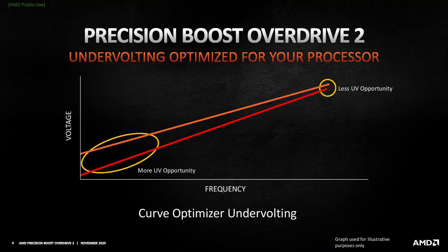The general takeaway from this data is that by lowering the operating temperature, we can effectively undervolt our Ryzen CPUs. We can also undervolt using Curve Optimizer, so the question is: who does it best — Curve Optimizer or our cooler?